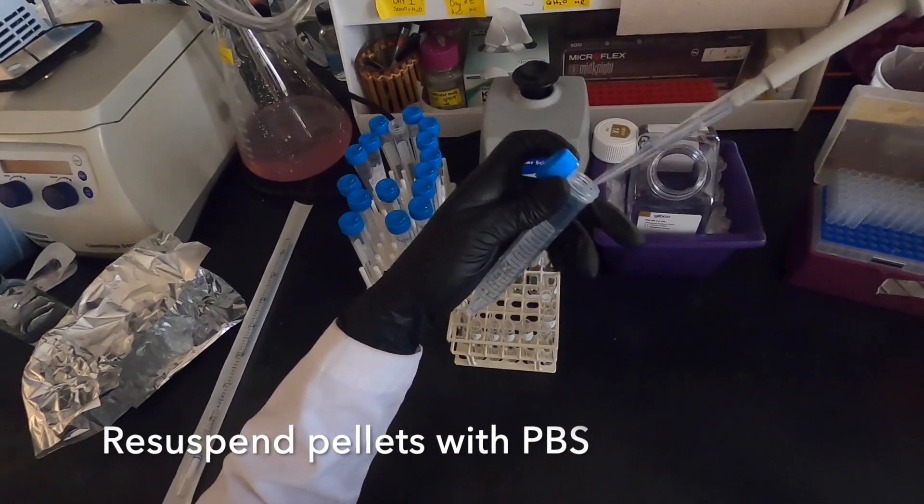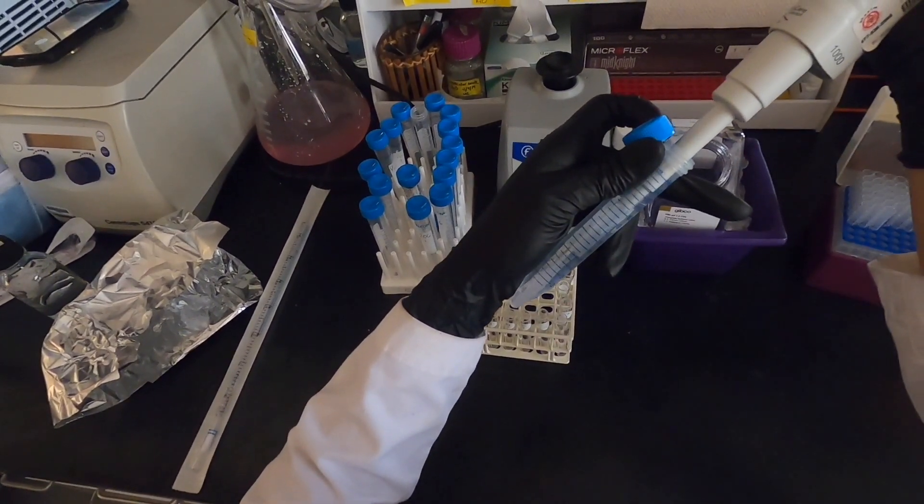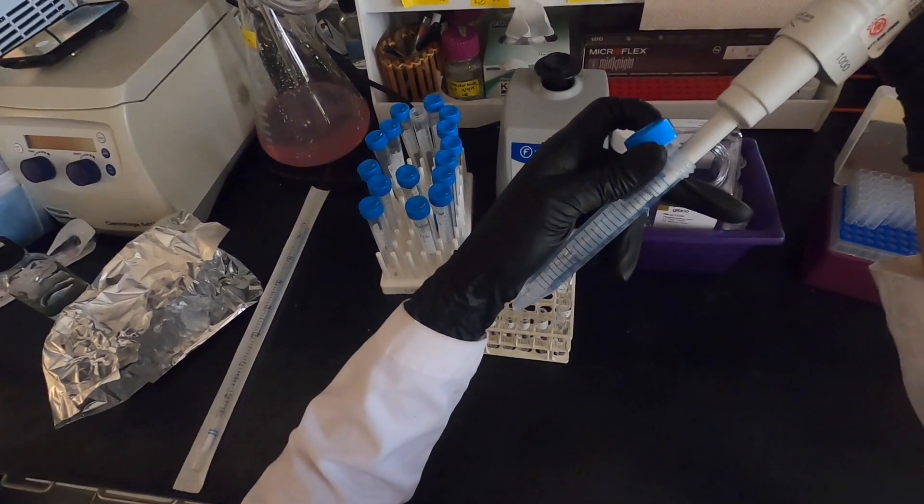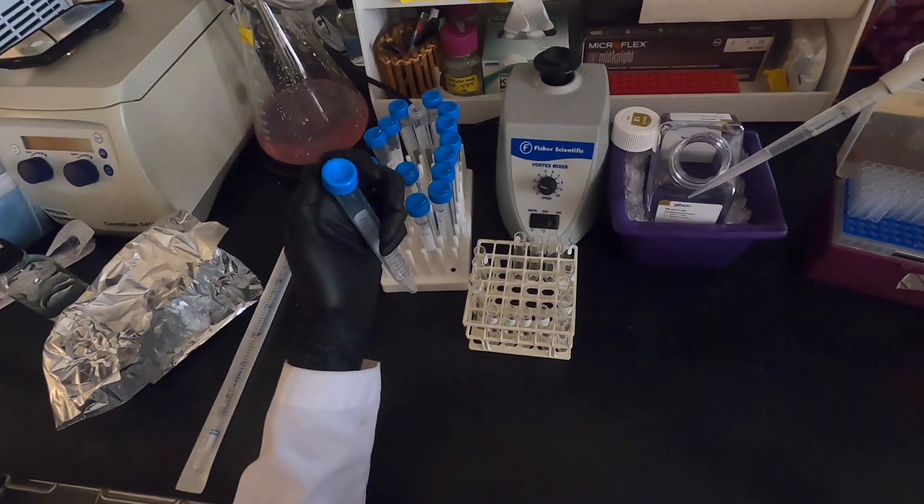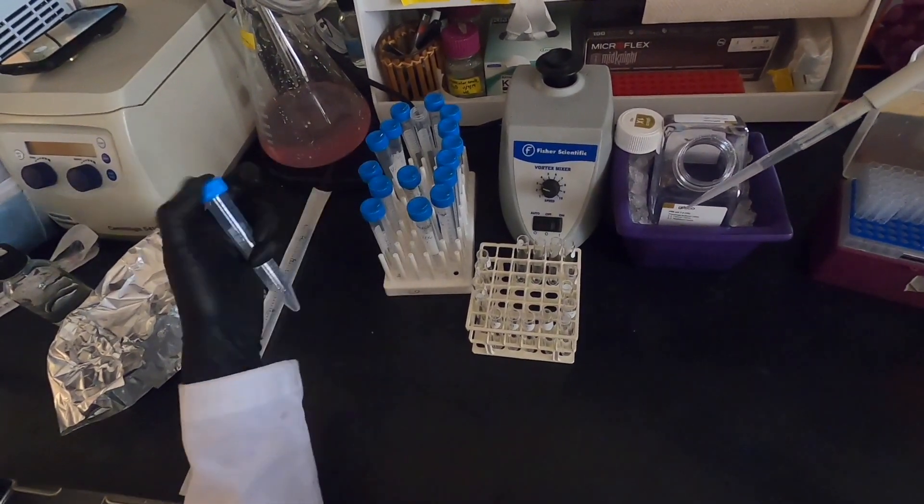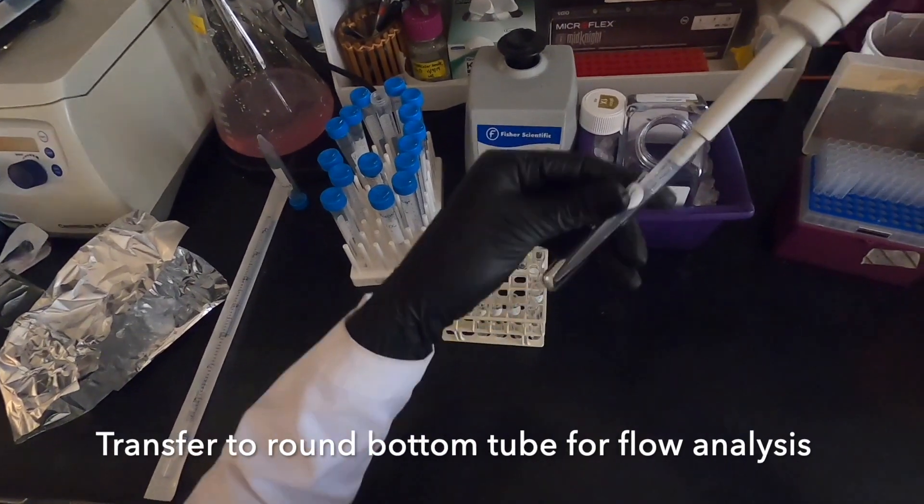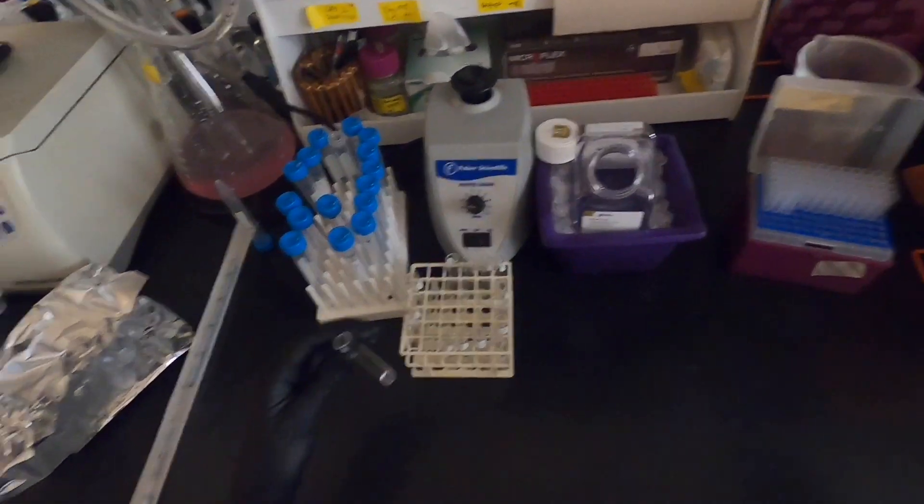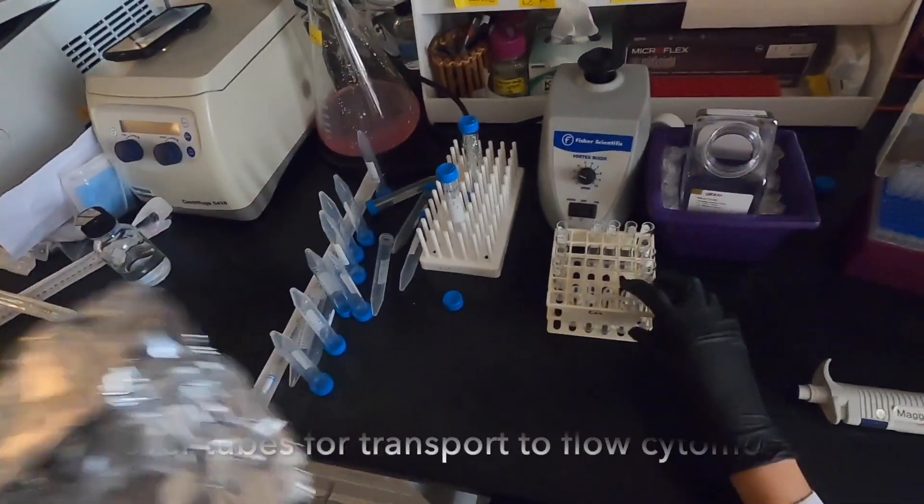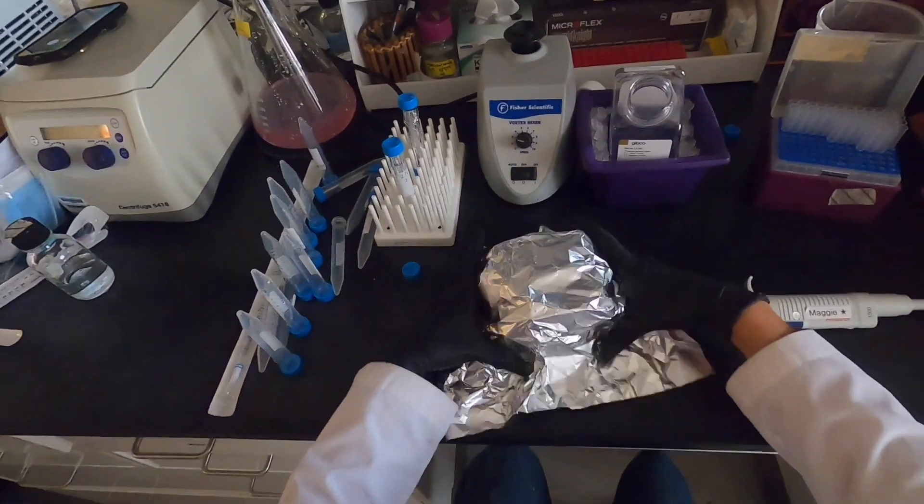Finally, we are resuspending our pellet in 500 microliters of PBS. We are also transferring our cell suspension to round bottom tubes that are suitable for our flow cytometer. We are now done with the bench work and can proceed to the cell cycle analysis using the flow cytometer.